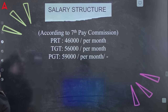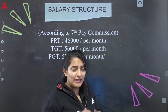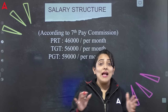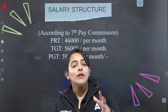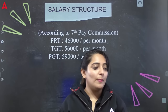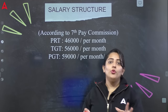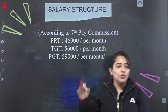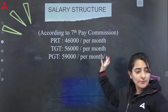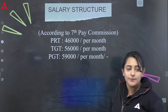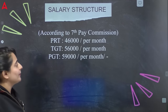Salary structure की बात करें तो बहुत सारे benefits हैं। यह 7th Pay Commission के अंतर्गत आता है। PRT की basic salary लगभग 46,000 per month, TGT की 56,000 per month, और PGT की 59,000 per month होती है। Promotions भी होते हैं, जो आपकी life में एक बड़ा difference लाते हैं।